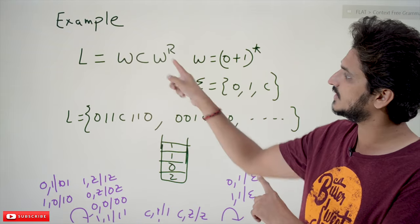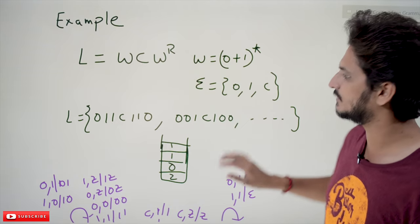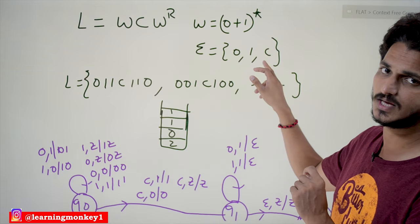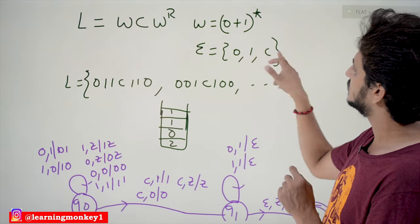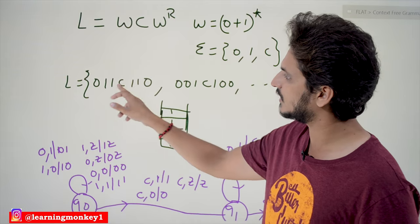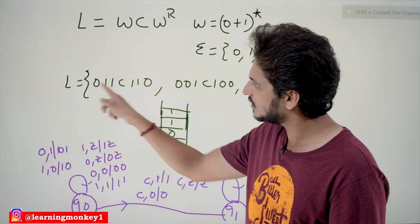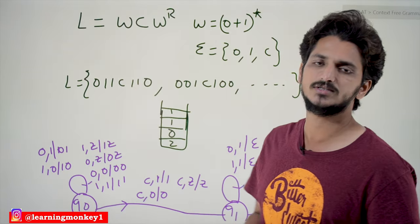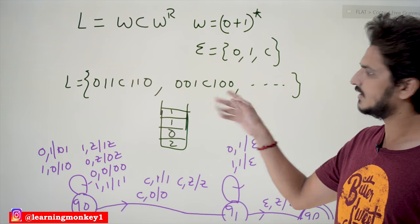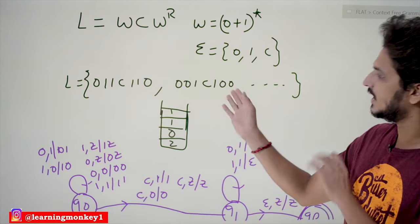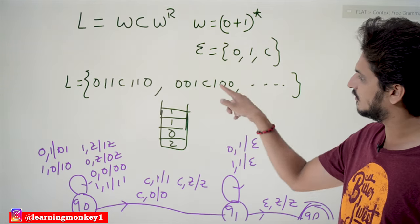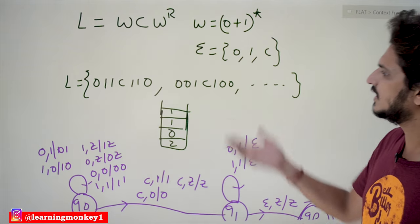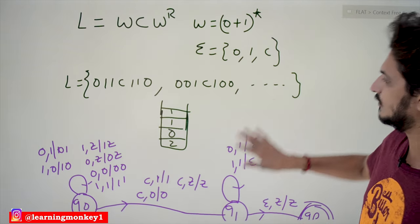The part after 'c' must be exactly the reverse of w — that is what w^r means. The input alphabet is Σ = {0, 1, c}. For example, the string '011c110' has w = '011' and w^r = '110', with 'c' in between. Similarly '001c100': after 'c' the string must be exactly the reverse of the part before 'c'.